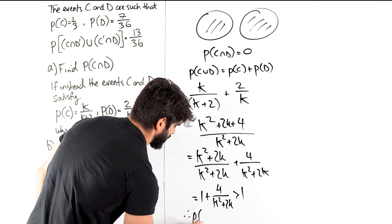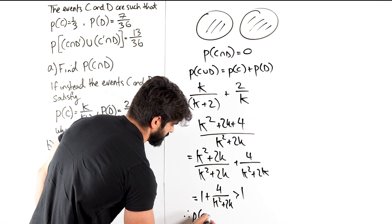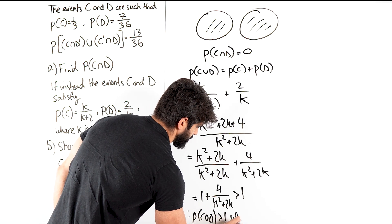Therefore, that would imply that probability of C or D is greater than 1, which is not possible.